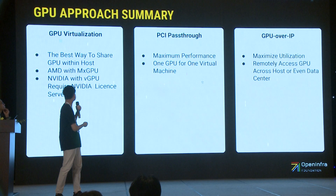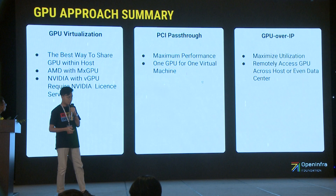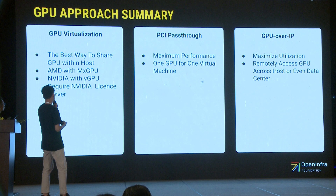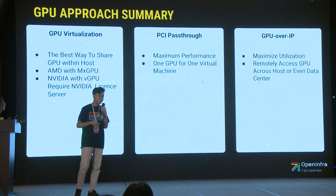From all the GPU approaches, which one is correct for you? It may be different for each company, so you have to decide wisely. For GPU virtualization, this is the best way to share GPU within the same host. If you want to maximize GPU utilization, you can fragment your GPU — for example, share one GPU to six virtual machines. AMD GPU has a solution called MXGPU which does not require a license, while NVIDIA calls theirs NVIDIA vGPU, which requires a license as mentioned earlier.